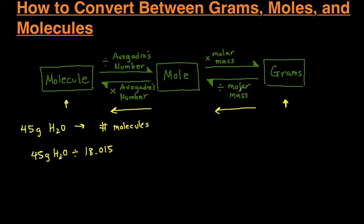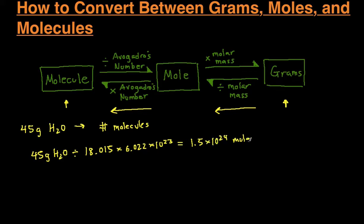Great, so we just knocked out that first step, so we get to moles. Then for moles to molecules, we're going to multiply by Avogadro's number, which is 6.022 times 10 to the 23rd. We plug that into our calculator and we get 1.5 times 10 to the 24th molecules of water.